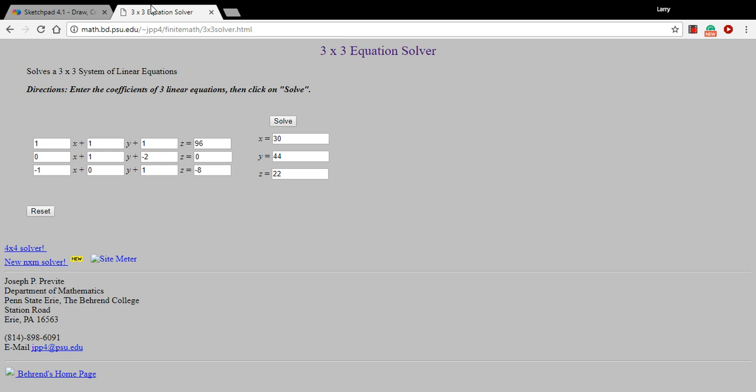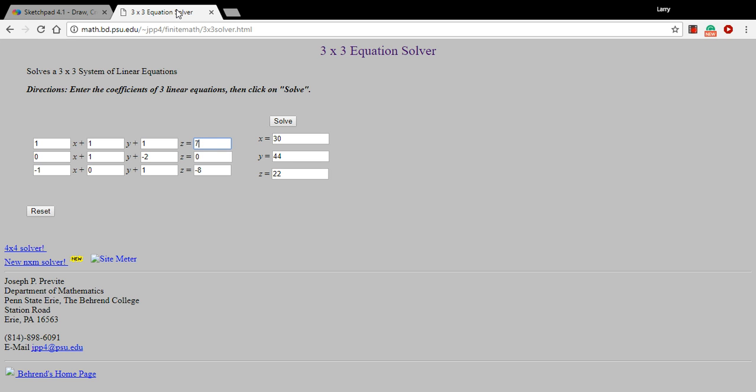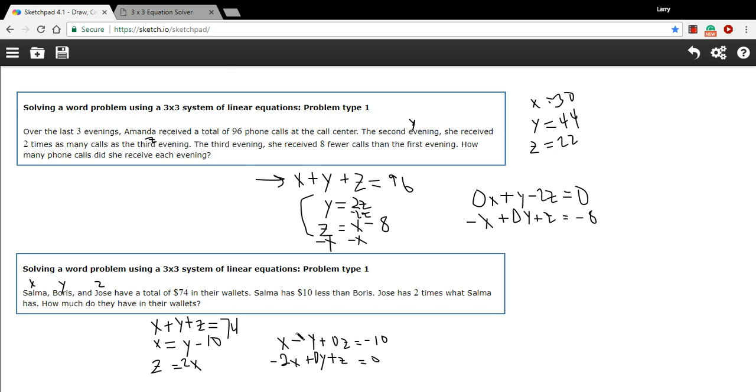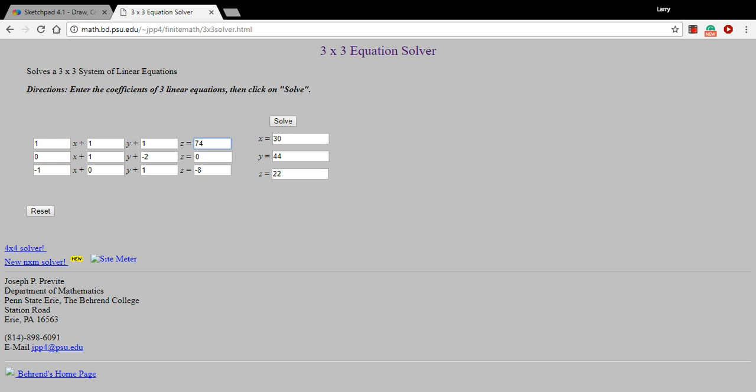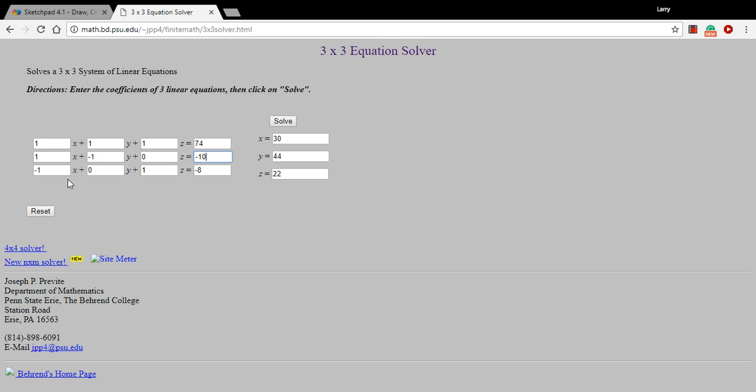Let's go ahead and plug those in. So the first one, I've already forgotten. What does that add up to? 74. So 1, 1, 1, and 74. For the second one, we're going to get 1, negative 1, 0, negative 10. And for the last one, we're going to get negative 2, 0, 1, 0. And 0.